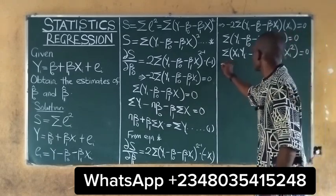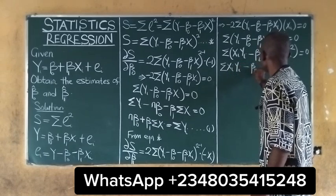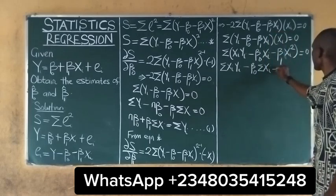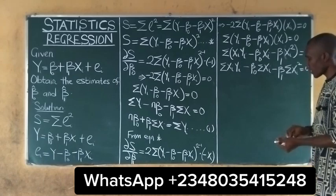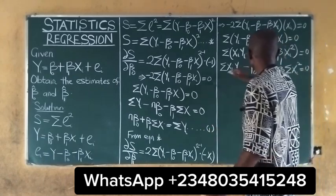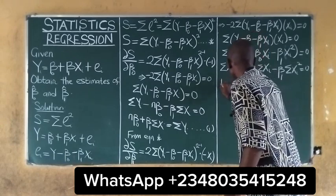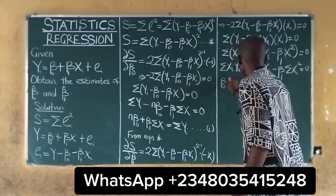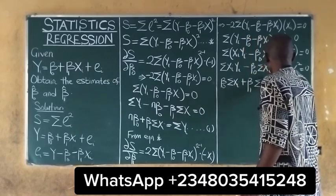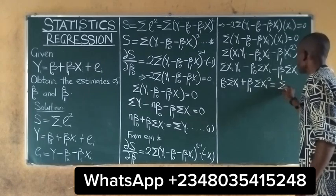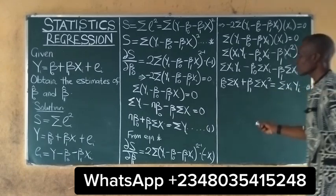which equals zero. Taking the sum, we get summation of Xi*Yi minus B0*summation(Xi) minus B1*summation(Xi squared) equal to zero. Rearranging to the form of Equation 1, we have B0*summation(Xi) plus B1*summation(Xi squared) equal to summation(Xi*Yi). We take this as our Equation 2. The next thing to do is to combine Equation 1 and Equation 2.